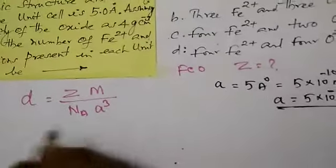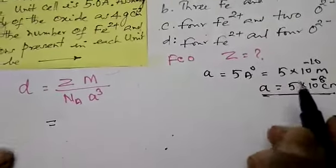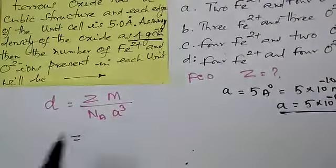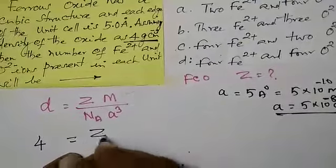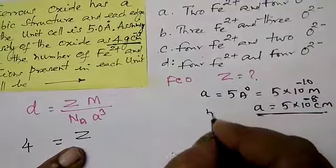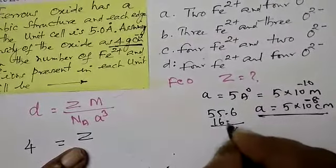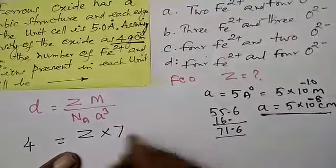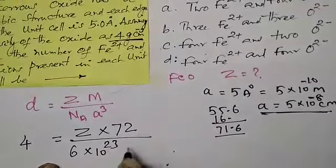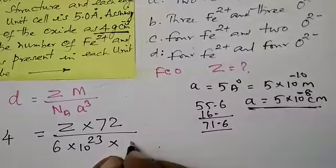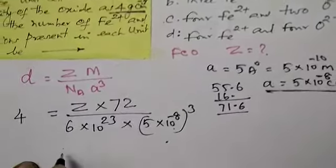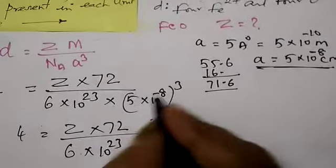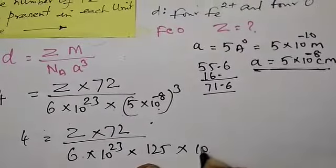Now substituting into the formula: density D = 4, Z into molar mass divided by Avogadro's number into A³. The molar mass of ferrous oxide: iron is 55.6 and oxygen is 16, adding to approximately 72. Dividing by 6 × 10²³ into (5 × 10⁻⁸)³ gives 125 × 10⁻²⁴. On cancelling 10²³ and 10⁻²⁴ we get 10⁻¹.